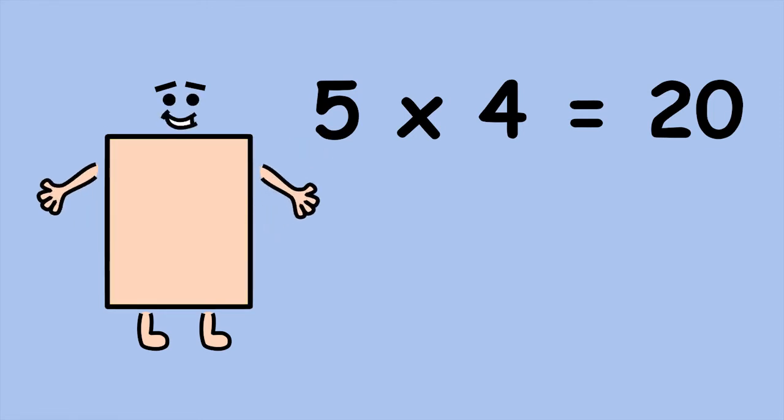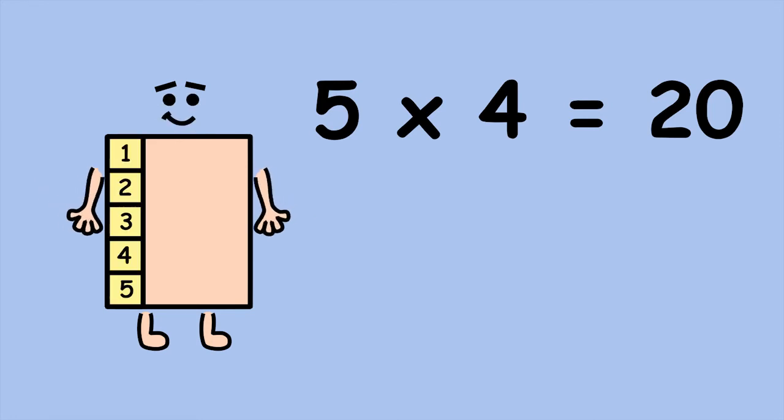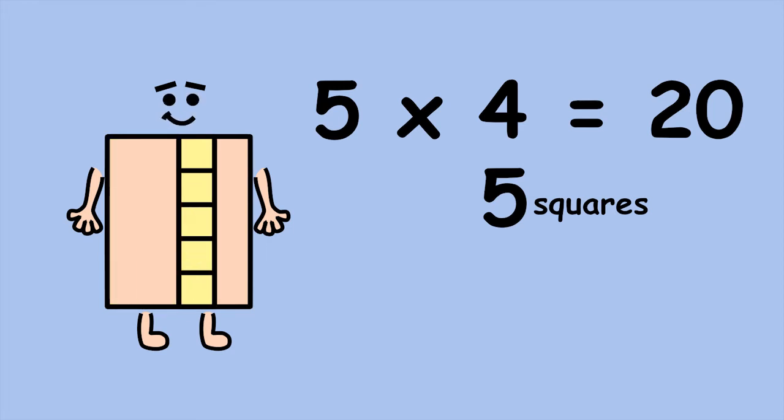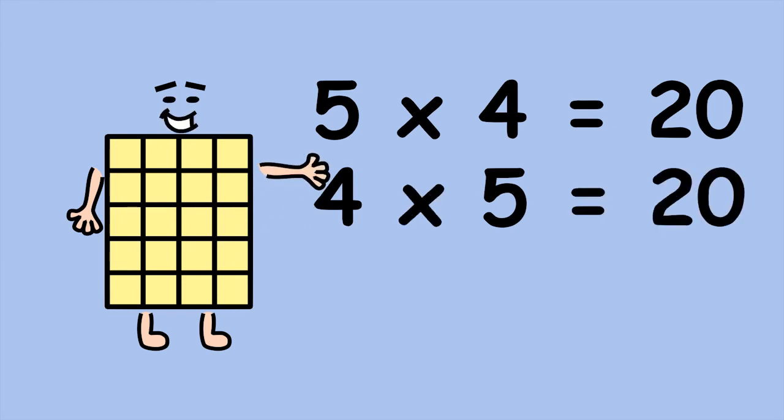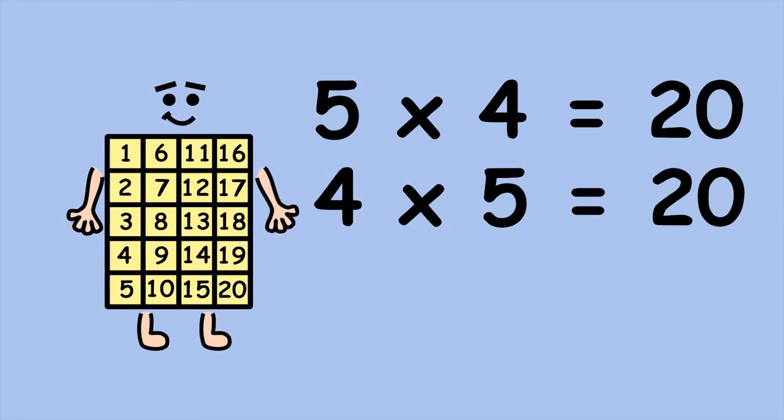If you don't like counting rows, you can count columns instead. There are five squares in a column. Now, how many columns are there? Four. Four groups of five, or 4 times 5 equals 20. Either way, you get the same answer.